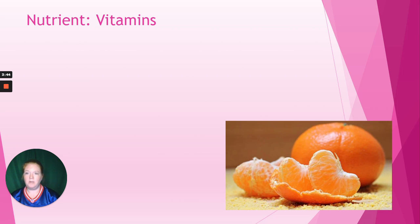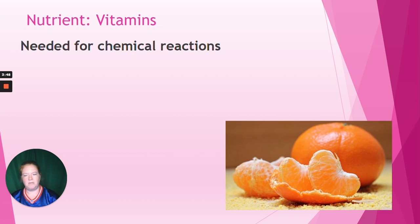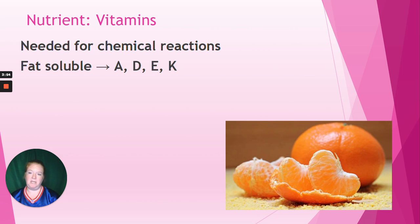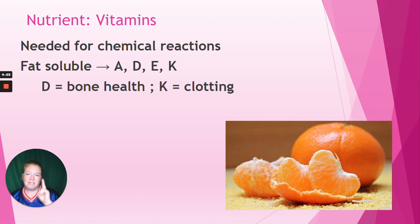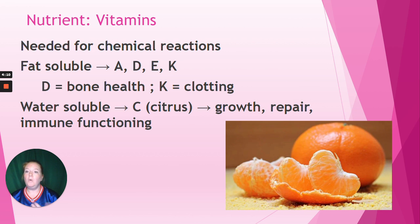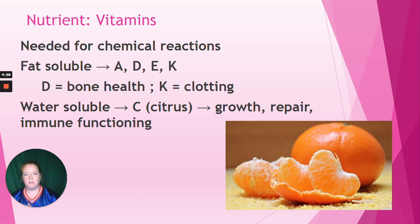The next category is vitamins, which are needed for chemical reactions. Most vitamins cannot be made by our body, so we need to consume them in our diet. There are only four that are fat-soluble: A, D, E, and K. Vitamin D is important for bone health, and vitamin K is important for clotting. All others are water-soluble. The big one I'll mention is vitamin C, which comes from citrus and is important for growth, repair, and functioning of our immune system.